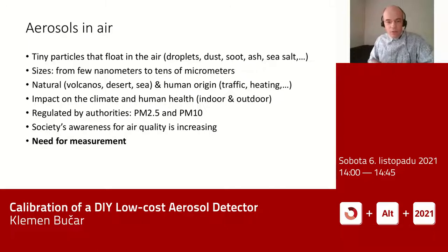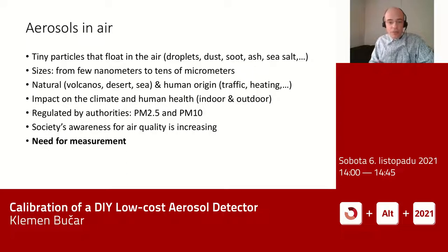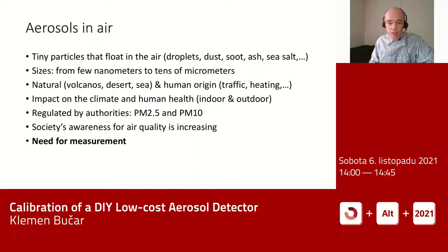What are aerosols? They are tiny particles that float in the air — droplets, dust, soot, ash, or sea salt. Their sizes vary from a few nanometers, sometimes referred to as nanoparticles, to tens of micrometers. They can be of natural origin, such as from volcanoes, deserts, or the sea, or of human origin, such as from traffic or house heating. They have an impact on climate and human health, both indoor and outdoor.